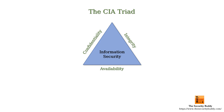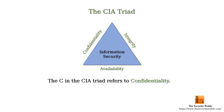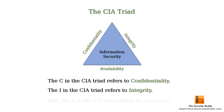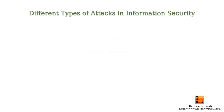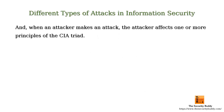The C in the CIA triad refers to confidentiality. The I in the CIA triad refers to integrity, and the A in the CIA triad refers to availability. And when an attacker makes an attack, the attacker affects one or more principles of the CIA triad.